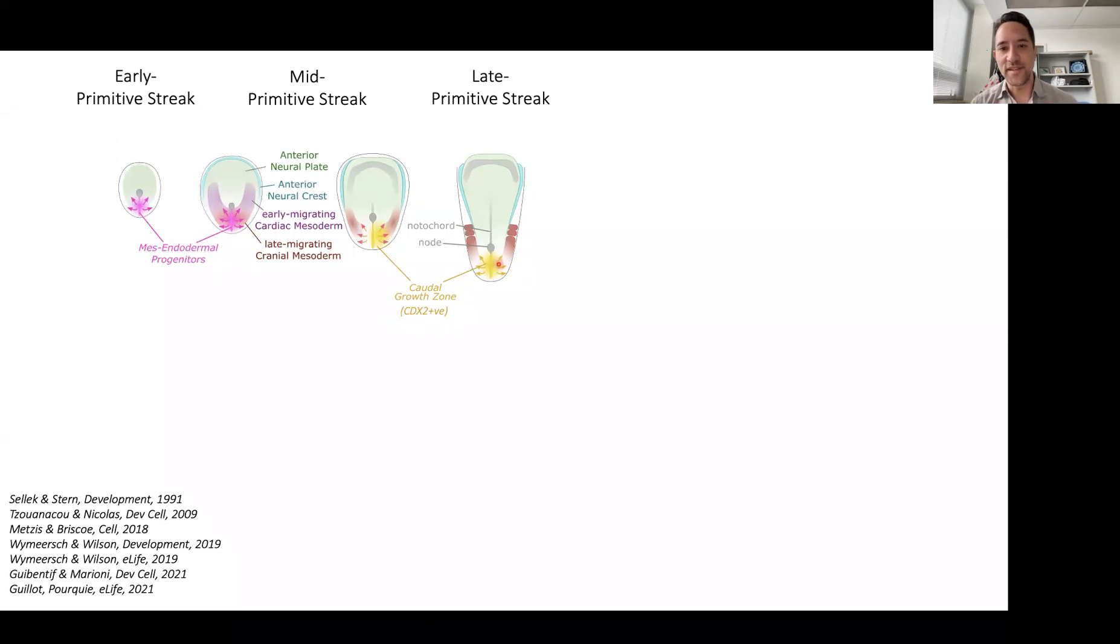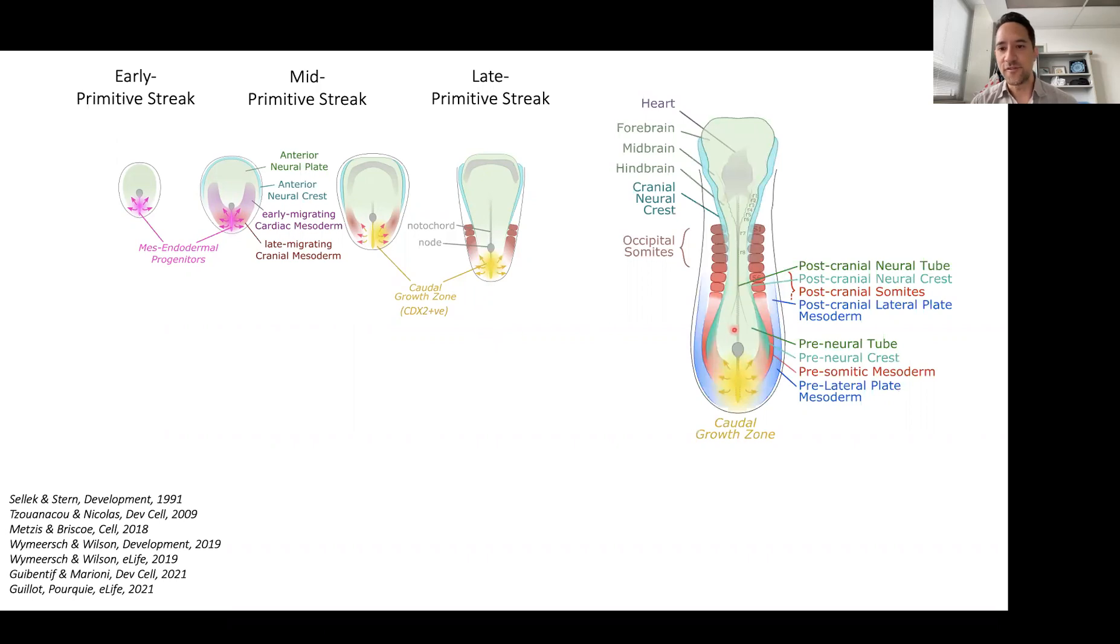The daughter cells from this zone slot into the more anterior body tissues, and as this proliferation increases over time and generates more and more daughter cells, the chordal growth zone is displaced posteriorly.